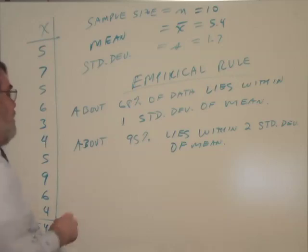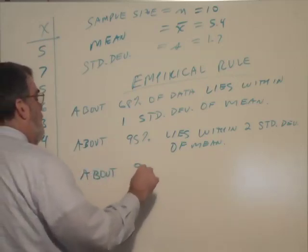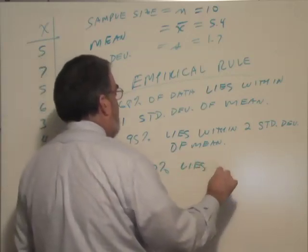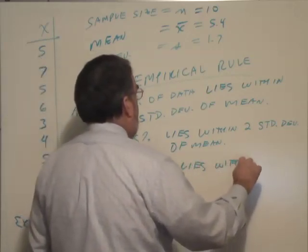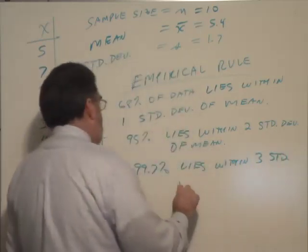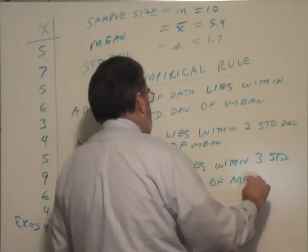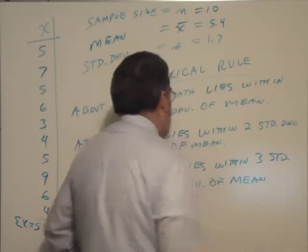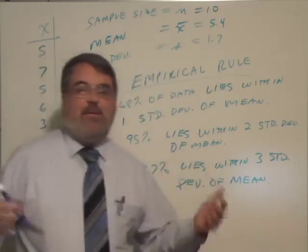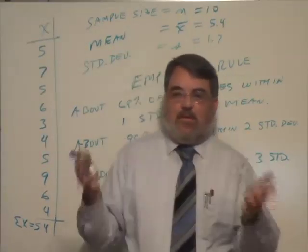And about 99.7 percent of data lies within three standard deviations of the mean. So I hope you can read my writing here. This is known as the empirical rule in some textbooks, and I like to use it to illustrate.